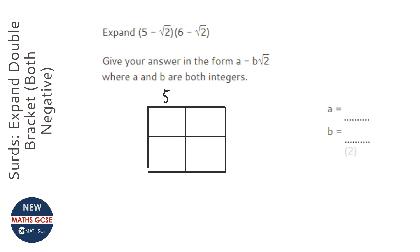So we've got 5 minus root 2 times 6 minus root 2. So 6 times 5 is 30. 6 times negative root 2 is negative 6 root 2. 5 times negative root 2 is minus 5 root 2.